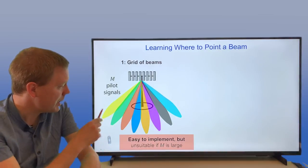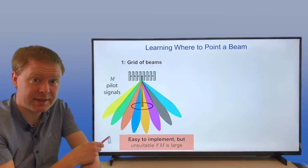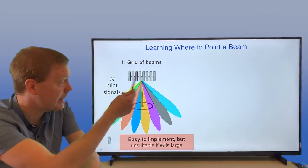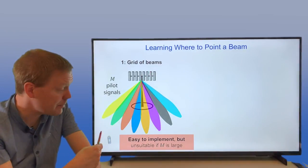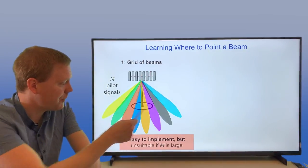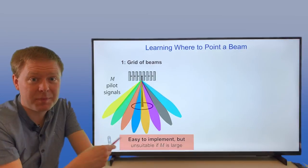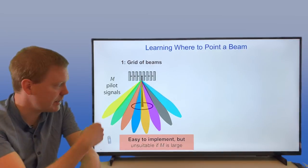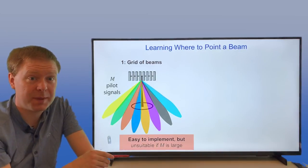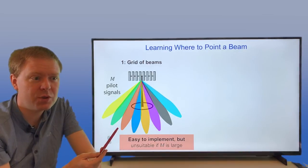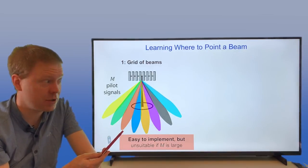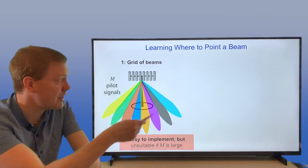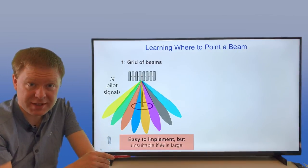The good thing with that is that it's easy to implement from a signal processing and protocol perspective. You only need to measure all these beams, then make a decision which one do I prefer, feed back an index, and operate using that beam. The problem is that if you have 64 antennas, you need to send 64 different beams. If you grow up even more antennas, this grows proportional to number of antennas. So it's not a scalable solution if you'd like to have very large arrays. For that reason, 5G isn't even supporting 64 beams yet.